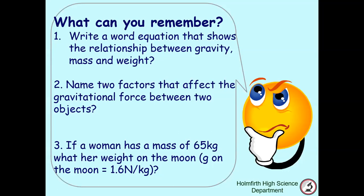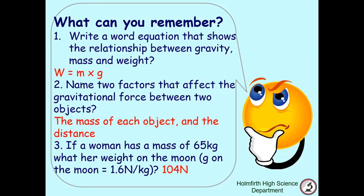Hopefully you had your book with you — you could actually look at question two if you'd forgotten. You won't be able to work out question three unless you know the relationship between gravity, mass and weight, which is: weight is equal to mass times gravity. The two factors that affect gravitational force between two objects are the mass of the object and the distance.